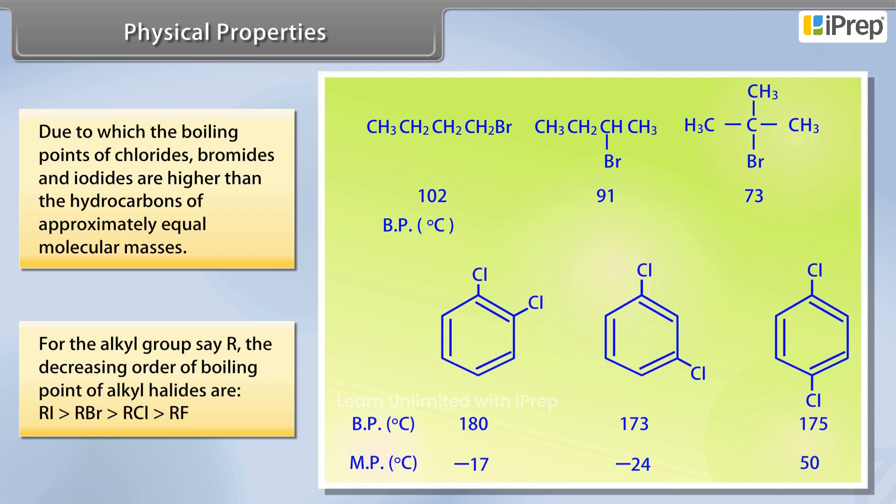For the alkyl group, say R, the decreasing order of boiling point of alkyl halides are: RI has the highest boiling point, followed by RBr, then RCl, and then RF.